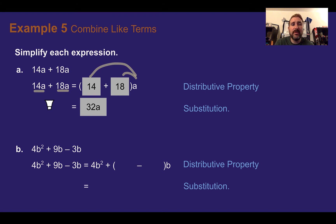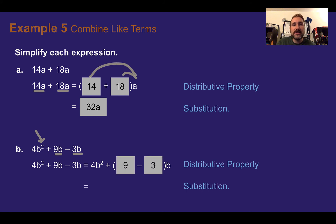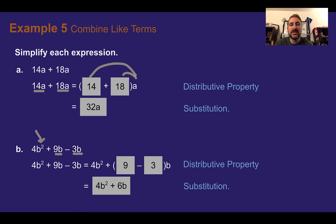For part b, we have 4b squared plus 9b minus 3b. The 4b squared has an exponent of 2, making it a different term — it is not a like term with 9b or 3b. So we combine only the b terms: 9b minus 3b gives us 9 minus 3 times b, which is 6b. The final simplified expression is 4b squared plus 6b. Both were b terms, so the variable stays as b.